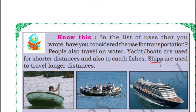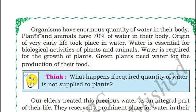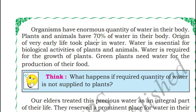Living organisms have a large quantity of water within them. Generally, animals and plants have about 70% water content in their body. There are many theories which say that the origin of life took place in water. We consume water for our survival, and even plants consume water for their survival.